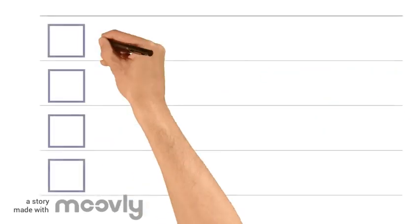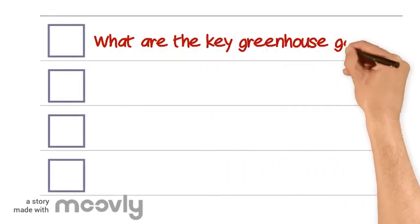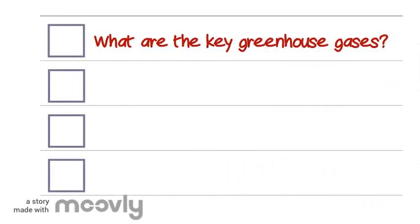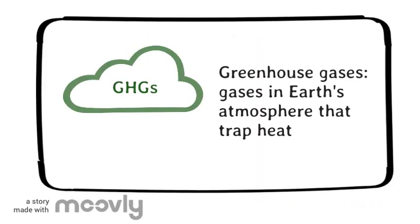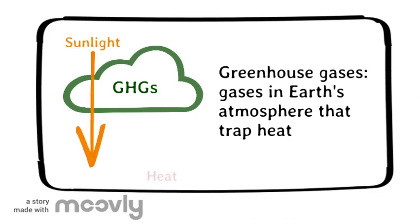So what are greenhouse gases? Greenhouse gases are gases in the Earth's atmosphere that trap heat. They let sunlight pass through the atmosphere, but they prevent the heat that the sunlight brings from leaving the atmosphere, which leads to the greenhouse effect.